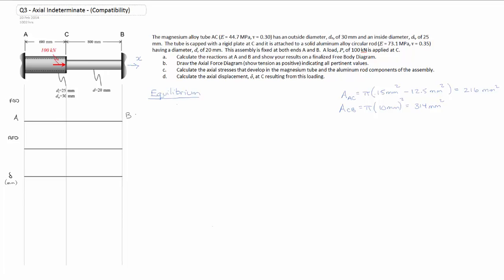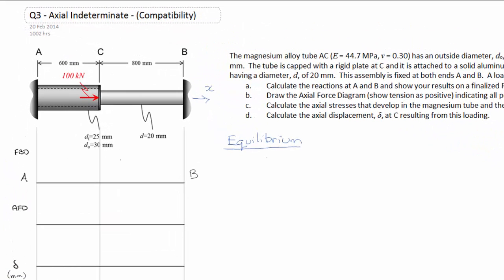I've drawn some vertical lines down on the page and some horizontal lines across it where we'll do our free body diagram, our axial force diagram and our displacement graph. The first thing I'm going to do is put in my applied force here, 100 kilonewtons applied at C.